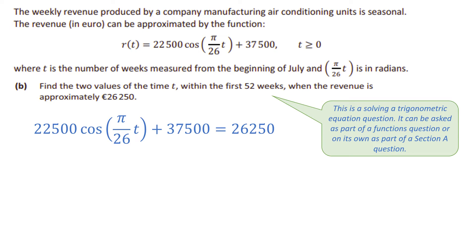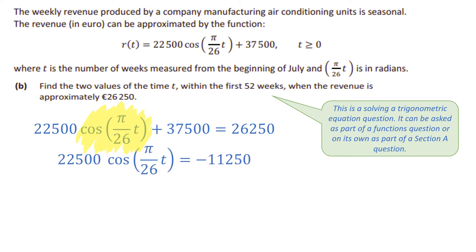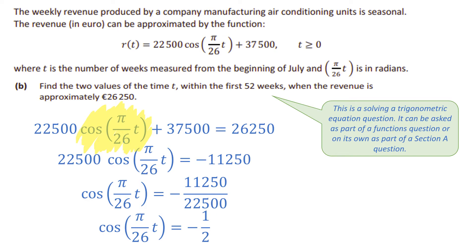We're trying to find the time when R(t) = 26,250. We let R(t) = 26,250 and isolate the trigonometric piece. These are sinusoidal functions — sine or cosine. In this case it's a cosine function. We want to focus on getting that cosine piece isolated on its own before we solve. In section a questions it's usually given already isolated.